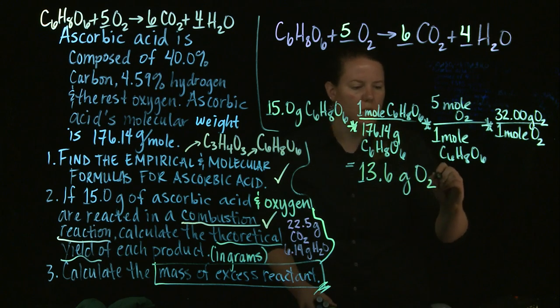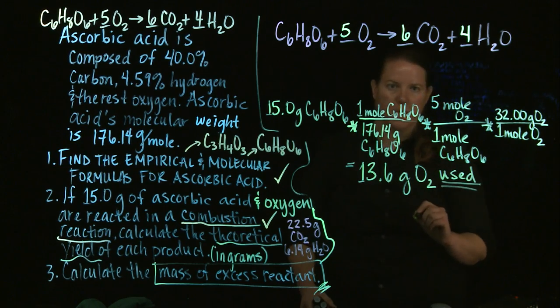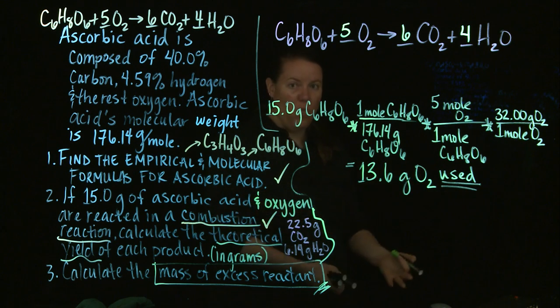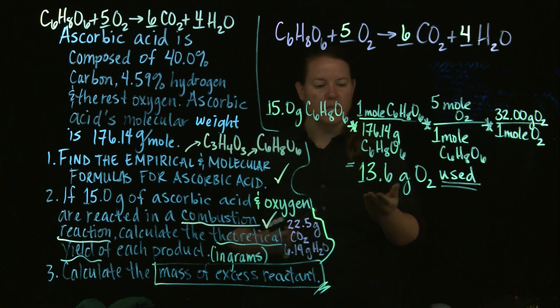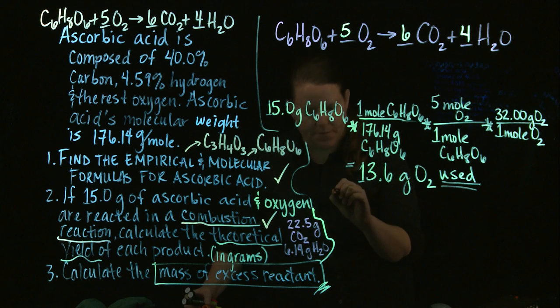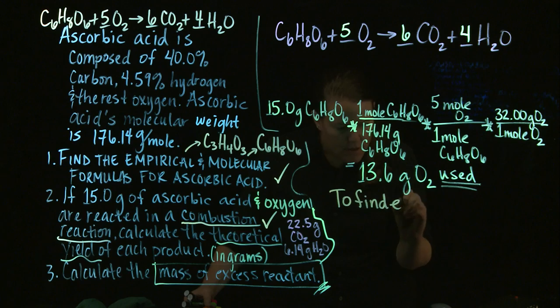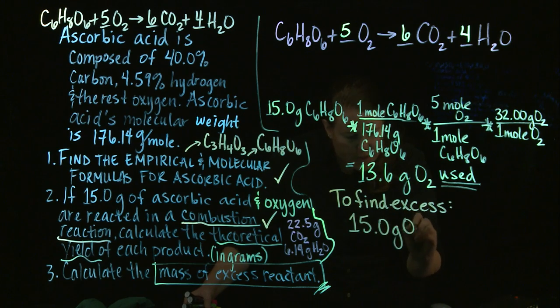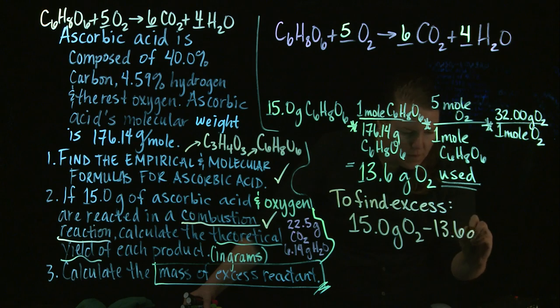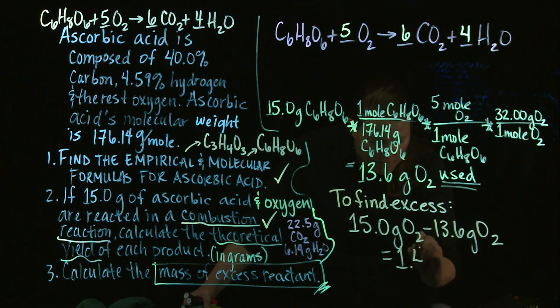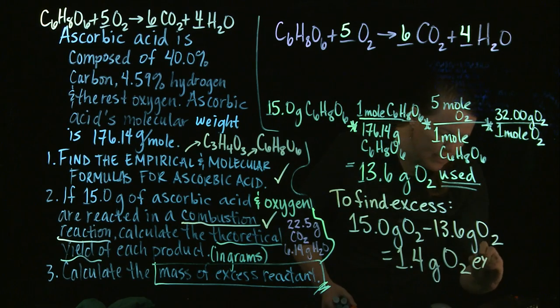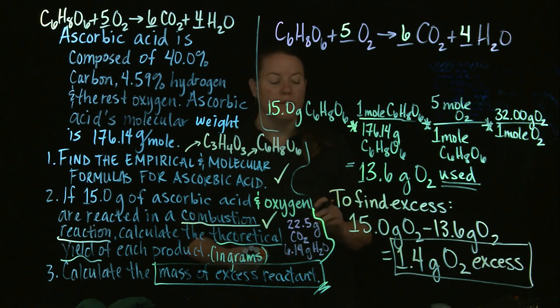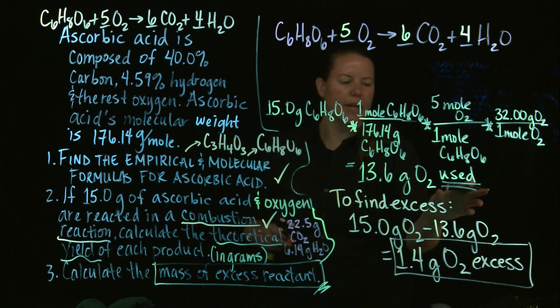That's how much O2 was used in this reaction. That's how much I needed to react with 15 grams of my limiting reactant. To find out how much is left over or excess at the end, I just simply take this amount and subtract it from my beginning amount of O2. So to find excess, I just take my original amount of O2, which was 15 grams, and I subtract out how much I used. And I'm going to get 1.4 grams of O2 is excess, left over at the end. That's what excess means.